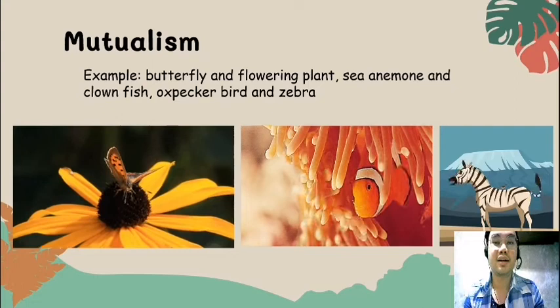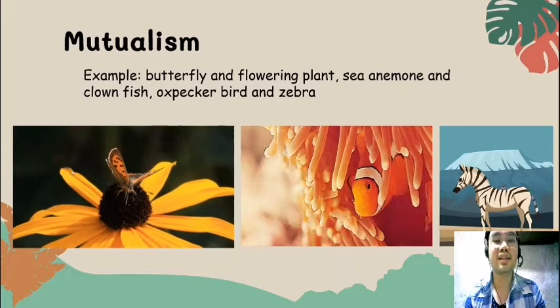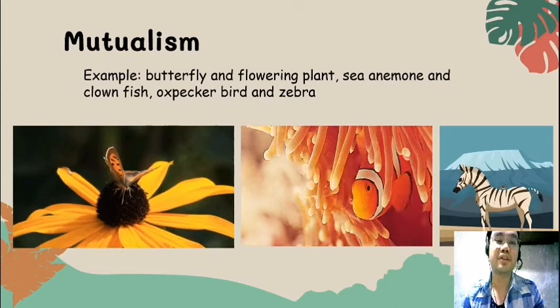Another example of mutualism is the zebra and the oxpecker bird. The oxpecker bird helps the zebra be more comfortable by eating the ticks attached to the zebra's body that the zebra cannot reach, which in return serves as the food of these birds.